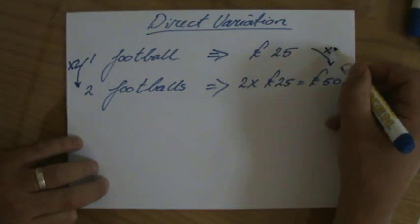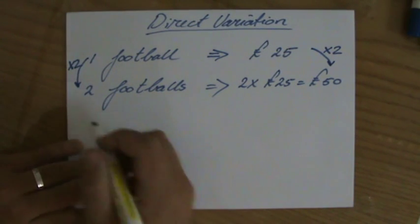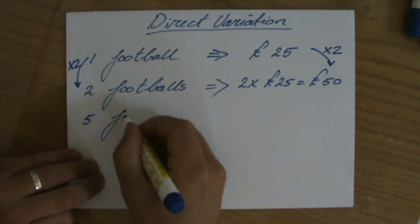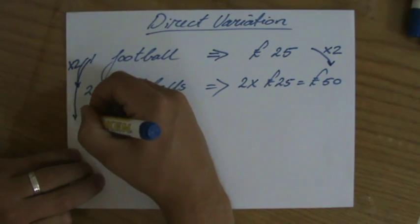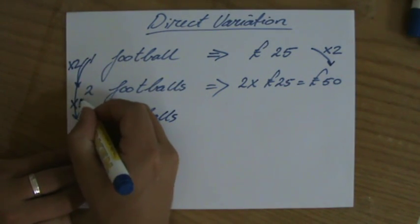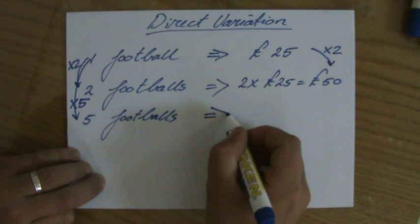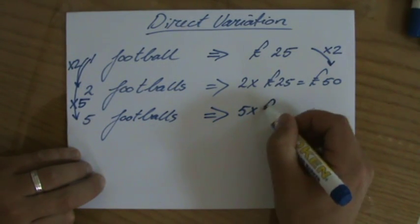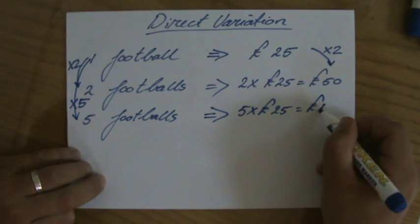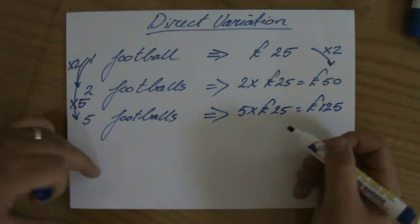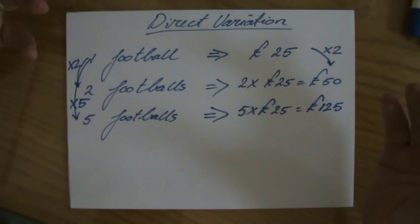If I decide to buy five footballs, well, one football to five footballs, that is a factor of five. So the price will also be increased by a factor of five, so it's going to be 125 pounds. That is direct proportion, and you should be already familiar with that.